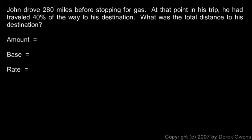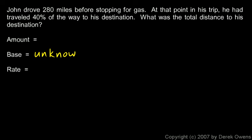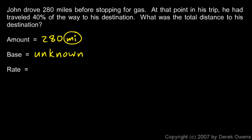One more: John drove 280 miles before stopping for gas. At that point he had traveled 40% of the way to his destination. What was the total distance to the destination? The total distance — the whole thing — is the base, and that's our unknown here. The amount is the fraction of the base, which is the 280 miles he's driven so far. And the rate — we're told 280 miles is 40% of the way — so the rate is 40%.